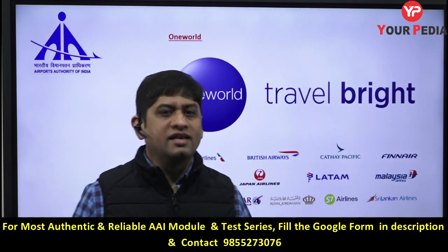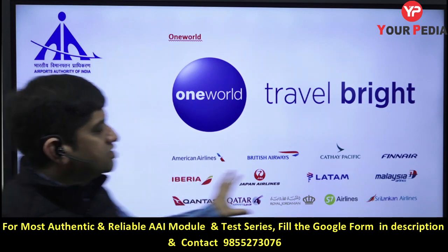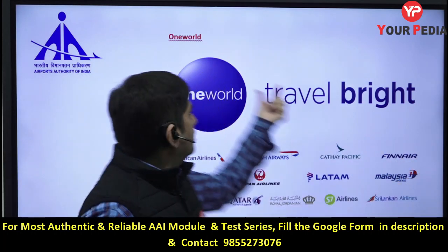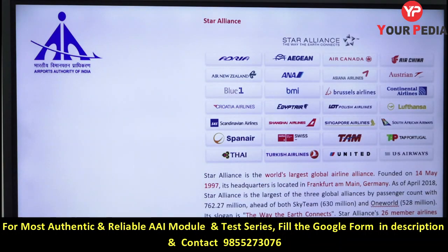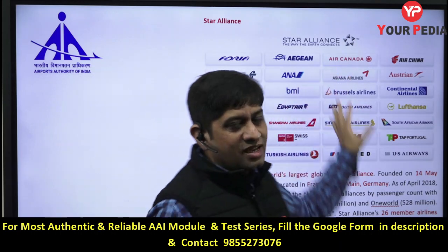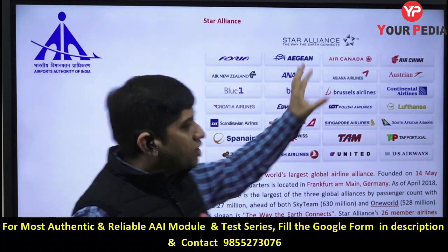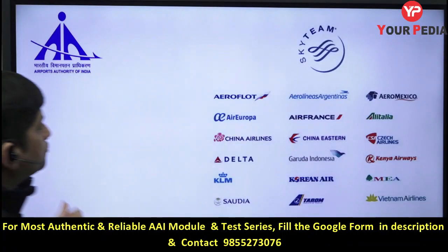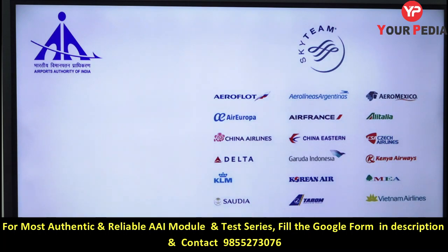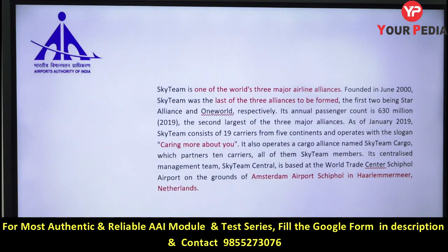There are global airline alliances. One World is an alliance of 13 airlines. Star Alliance is the world's largest airline alliance, and India is part of Star Alliance. Then comes Sky Team. So the three global alliances are: Star Alliance (the largest), followed by Sky Team and One World.